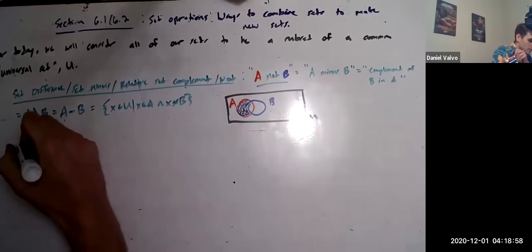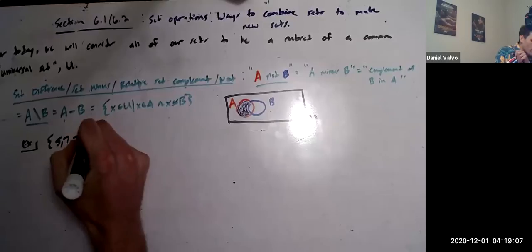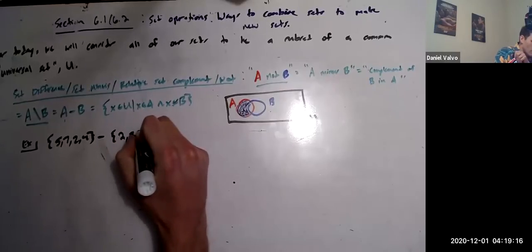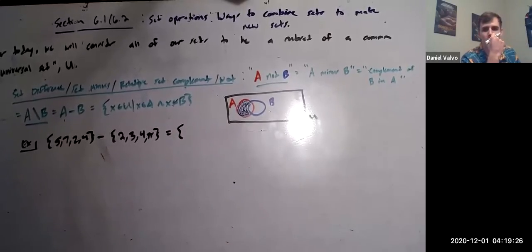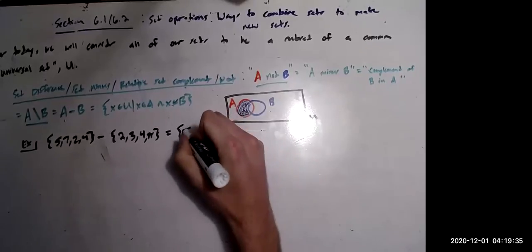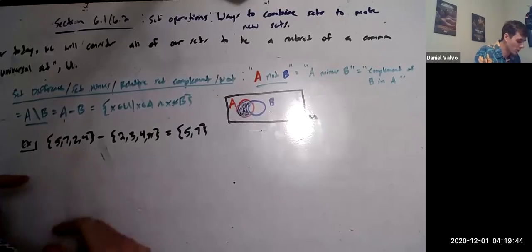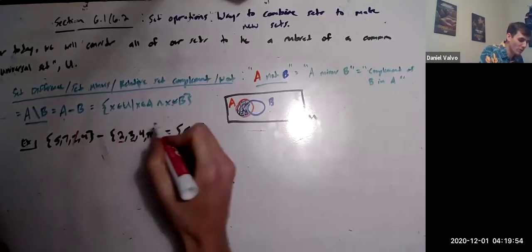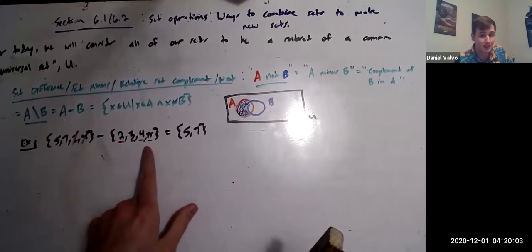For example, if we do the set {5, 7, 2, 4} minus {2, 3, 4, π}, what's that going to be? The answer is {5, 7}. Because we look through and go: we have 5 and 7 here, and we don't want 2 and 4. We have 5, 7, 2, and 4 in the first set, but we don't want anything that's also in the second set. So since 2 is in there, we cross it out. Since 3 — we have no 3, but we cross it out. Since 4 is there, we cross it out. And there's no π in the first set, so we're not doing anything there. You're literally going through everything you're subtracting and just crossing it out of the set.